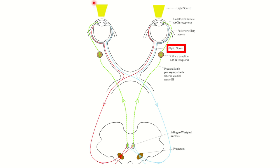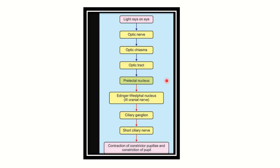When light is placed in one eye, during the accommodation reflex, two reflexes go to both eyes — so light in one eye causes accommodation in both eyes. Two nerves are responsible: one is the optic nerve and another is the oculomotor nerve. The normal pathway is: light rays enter the eye, then the optic nerve, optic chiasm, optic tract, pre-tectal nucleus, Edinger-Westphal nucleus, ciliary ganglion, short ciliary nerve, and finally constriction of the pupil.